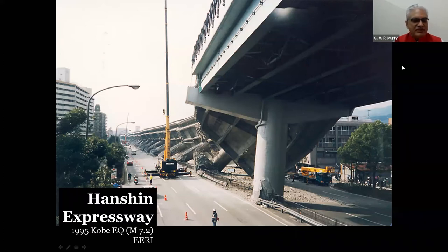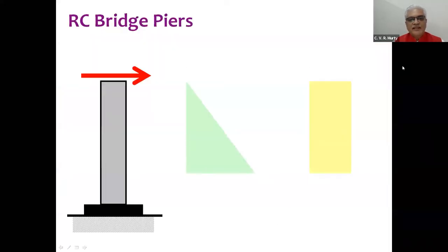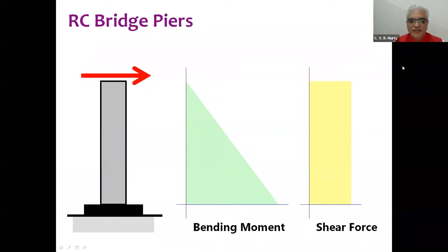Let's begin today's discussion with coexisting V, N, and M in bridge piers. We have a bridge pier, and the shear force from the superstructure during earthquake shaking imposes a bending moment demand and a shear force demand on the bridge pier.